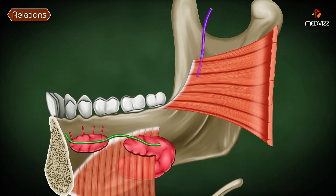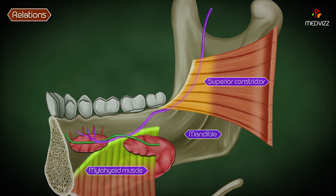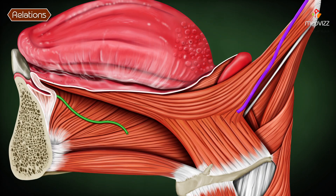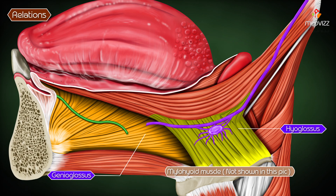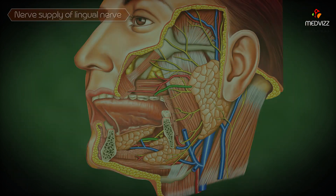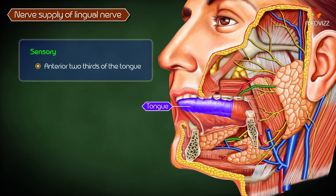The nerve runs downwards and forwards between the ramus of the mandible and the medial pterygoid, then lies in direct contact with the mandible medial to the third molar tooth, between the origins of the superior constrictor and the mylohyoid muscles. It then runs over the hyoglossus deep to the mylohyoid, lies on the surface of the genioglossus, winds around the submandibular duct, and divides into its terminal branches.